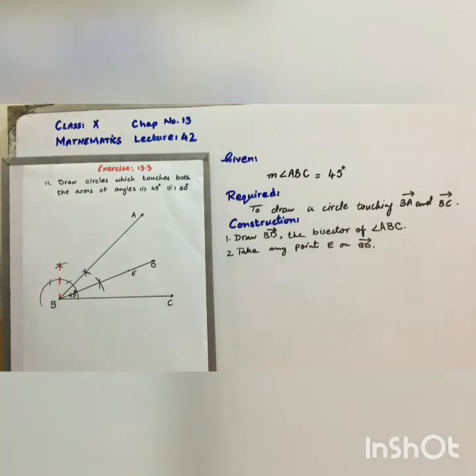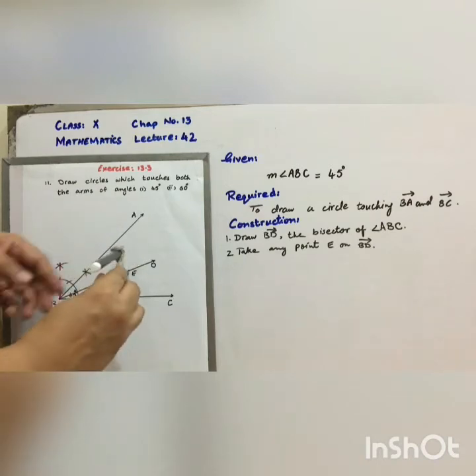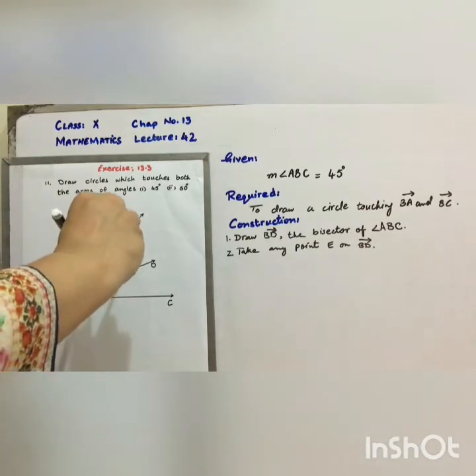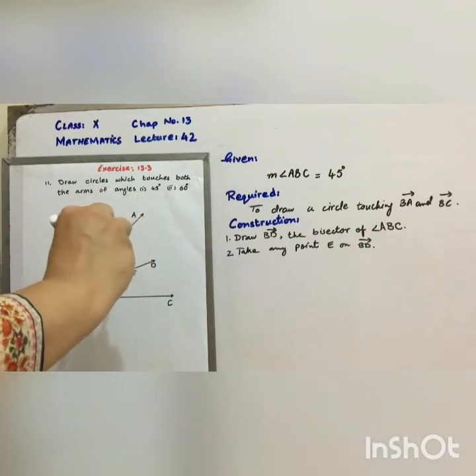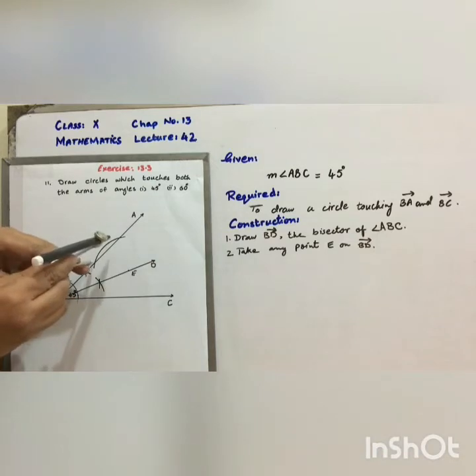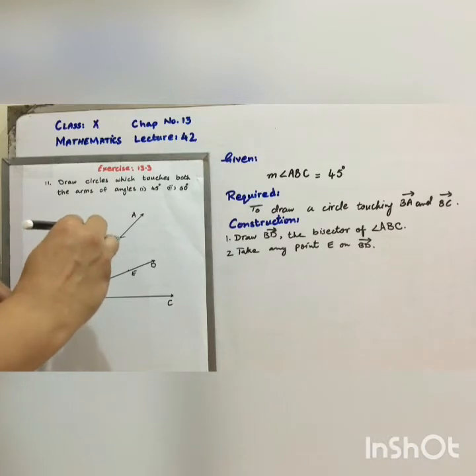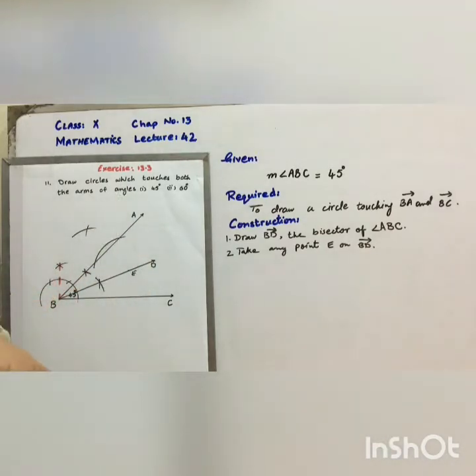From E, we will draw a perpendicular to ray BA or BC. With center E and any radius, mark an arc which will intersect ray BA at two points. And with the help of these two points, further we will draw arcs which will intersect each other at a point.